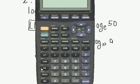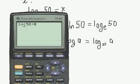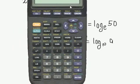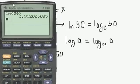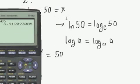So on the calculator there's that button. Just clear that. 50. So I've got there lon or log to the base e of 50. Enter.